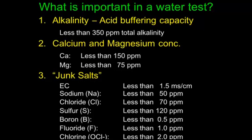What's important in a water test? First is alkalinity — you want to see less than 350 ppm, because if levels are higher, growers tend to have problems with salt buildup from acidification, or pH management problems if they're not acidifying. For calcium and magnesium: generally you want less than 150 ppm calcium and less than 75 ppm magnesium, because above those levels it's hard to balance your nutrition program. For junk salts, generally you want an EC of less than 1.5 millisiemens per centimeter — or around 0.75 for plugs and propagation.